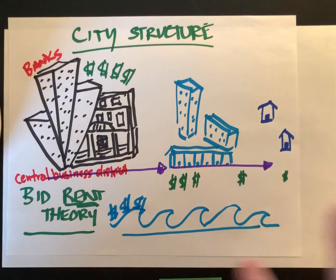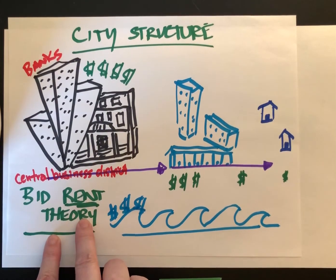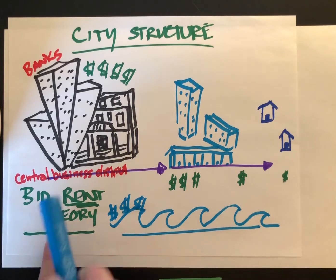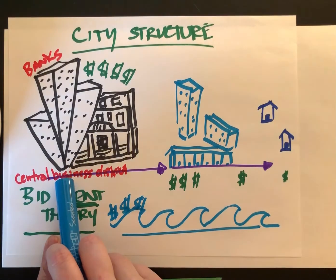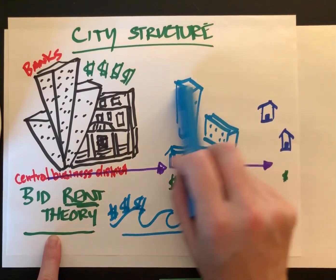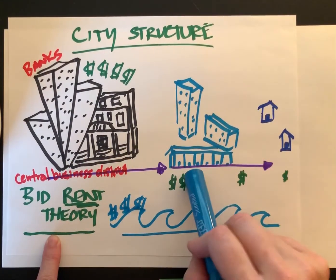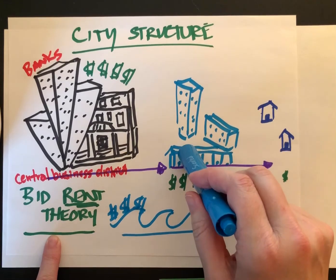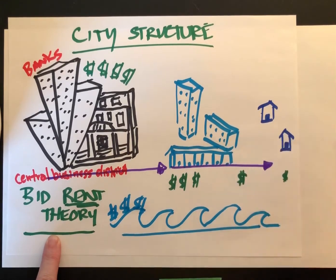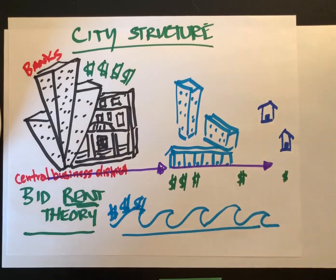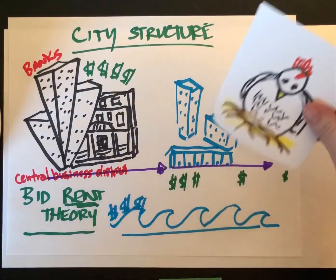That's another way of looking at city structure. Bid-rent theory covers the city core with the central business district, then higher-density housing, leading out to suburbs, and then rural areas.